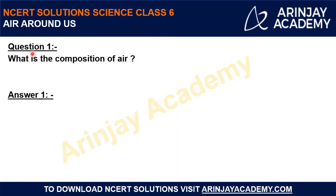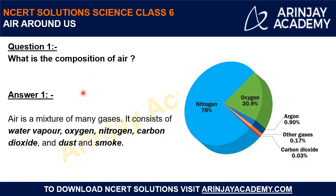Question 1: What is the composition of air? Air is a mixture of many gases. It consists of water vapor, oxygen, nitrogen, carbon dioxide, dust and smoke. The major constituent in air is nitrogen — around 78% of the air is nitrogen. Then around 21% is oxygen. In the remaining 1% we have carbon dioxide, water vapor, dust and smoke, and some other gases. This is the composition of air.